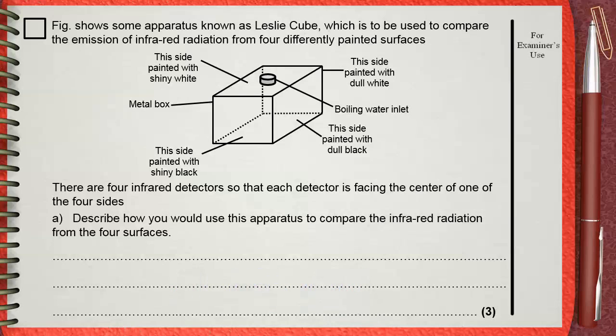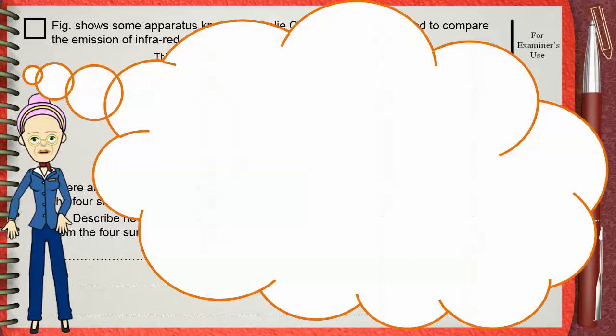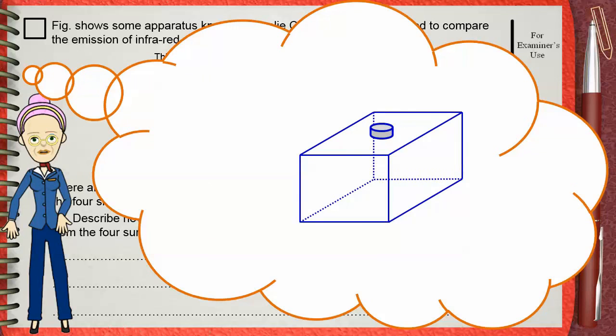Let's see what happens in the Leslie Cube. Leslie Cube is a hollow box. This is an inlet to pour boiling water inside. This is the source of heat. Hot water as a hot body will produce infrared radiation, which is heat radiation.